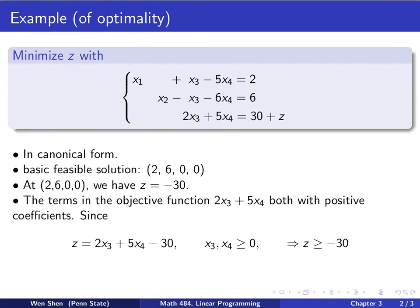Then the question is: is that the smallest z can get? Is that the minimum? We will take a look at the objective function. We note that in the objective function, for both terms x3 and x4, the coefficients are positive, 2 and 5. As long as they're positive, we'll have the same conclusion.